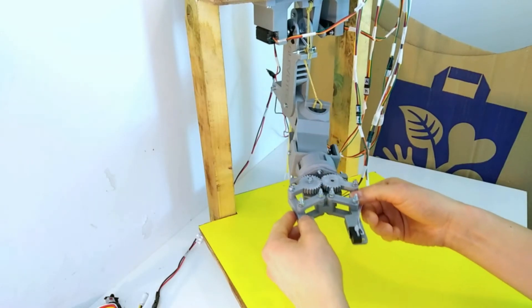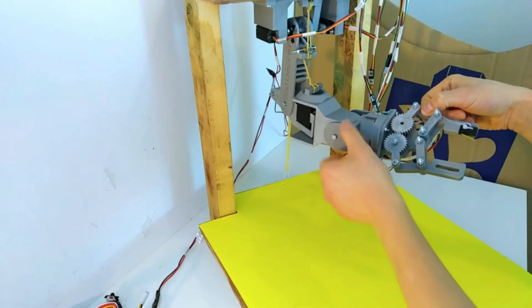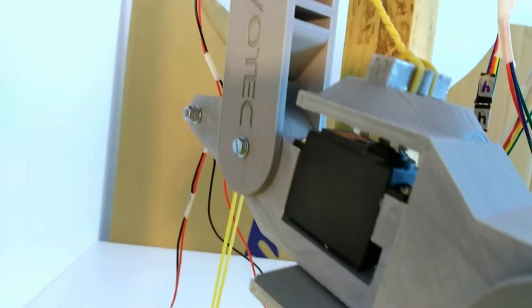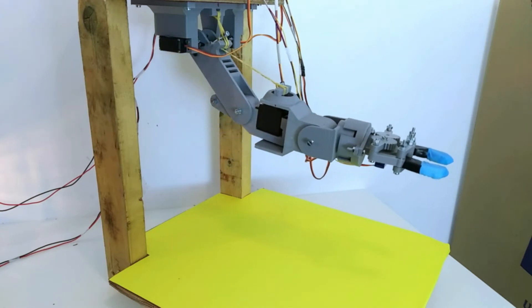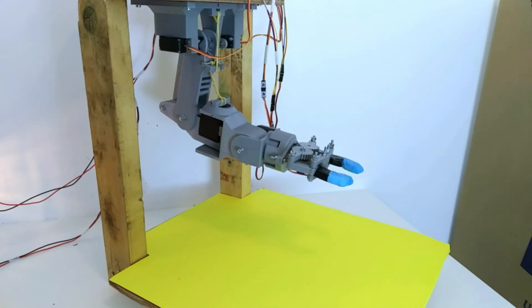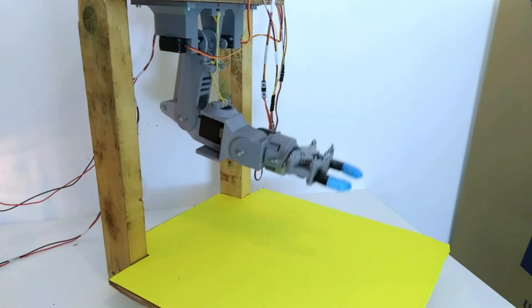To make it possible to program the servos by moving the arm manually we need to be able to read the position of the servos. Standard you can only command a position and we just assume that it actually moves to that position. There is no feedback.